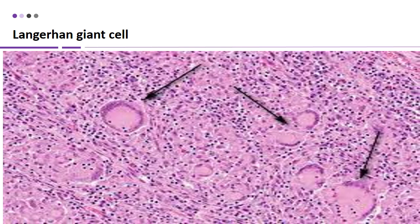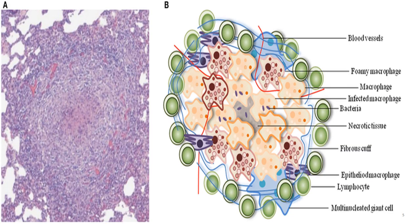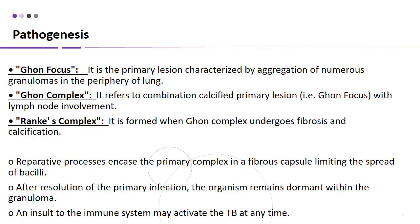Langerhans cells are not specific for tuberculosis but they are present in tuberculosis. This is the picture of a caseating granuloma. It has a necrotic base which contains dead or live bacteria and infected macrophages, surrounded by macrophages, then by epithelioid macrophages which fuse together to form multinucleated giant cells. The difference between caseating granuloma and non-caseating granuloma, as in sarcoidosis, is that caseating granuloma always has necrotic tissue, whereas non-caseating has inflammatory cells only.